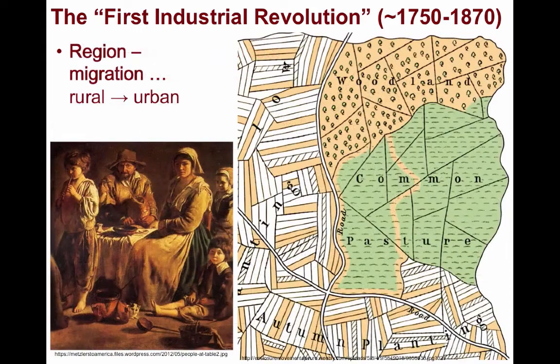Looking at region, due to the enclosure movement, many peasants were unable to afford to keep their lands and migrated from the rural regions to the urban ones — to the cities — because that's where jobs could be found. With this massive influx of cheap labor, Britain had the means necessary to run their factories with far less cost. This brings us to the second major factor of production: labor. Abundant cheap labor was of paramount importance especially for the beginning stages of the Industrial Revolution.